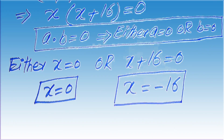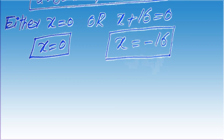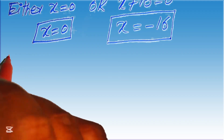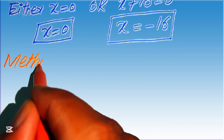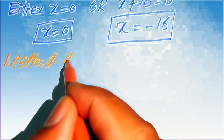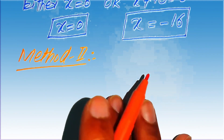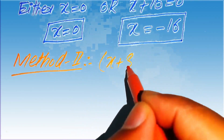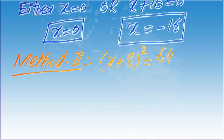These are the two roots from method one. We now move forward to solve this question using the second method. We copy down the given statement: x plus 8 whole squared equals 64.